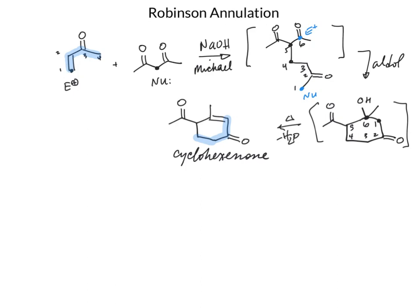So let's take a look at the mechanism here so we can follow along on how the Robinson annulation happens. It's kind of a long mechanism, but each step is just the individual reaction one at a time. So first we do a Michael reaction, and then we do an aldol condensation. Our first step is going to be deprotonation of the alpha-carbon using hydroxide.